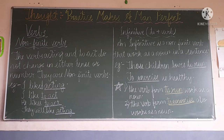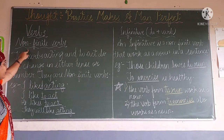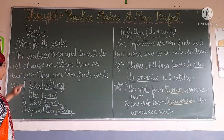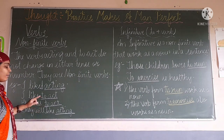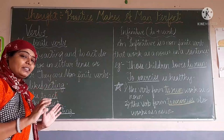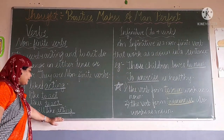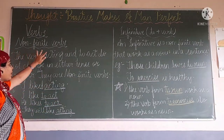Let's see examples. 'I like acting' — here the word 'acting' is the non-finite verb. 'I like to act' — 'to act' is also a non-finite verb. 'He likes to act' — 'to act' is the non-finite verb. 'They will like acting' — again in this sentence the word 'acting' is also the non-finite verb. The non-finite verb does not change the tenses or the number of the sentences.